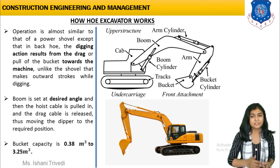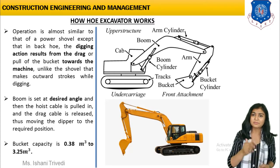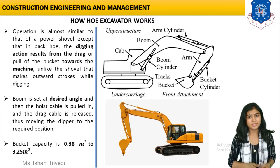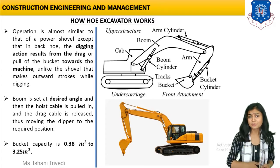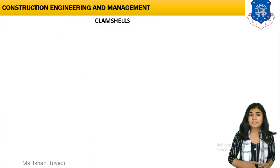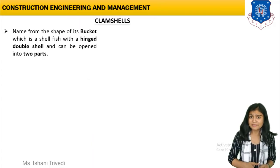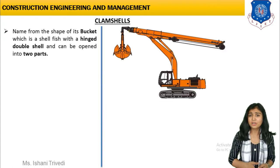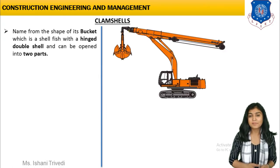The capacity of the bucket varies from 0.38 cubic meters to 3.25 cubic meters, which you are supposed to remember. Next, the last excavating equipment we are going to talk about is the clamshells.